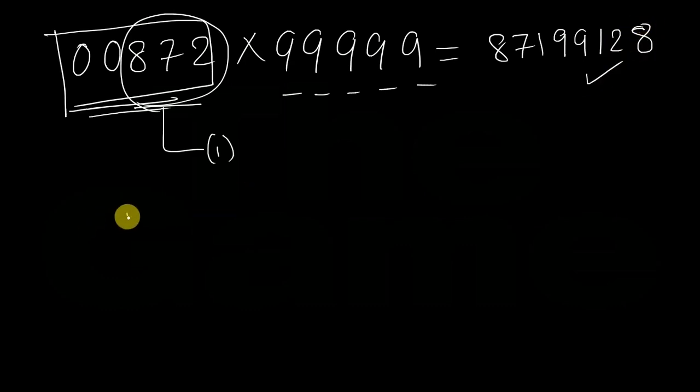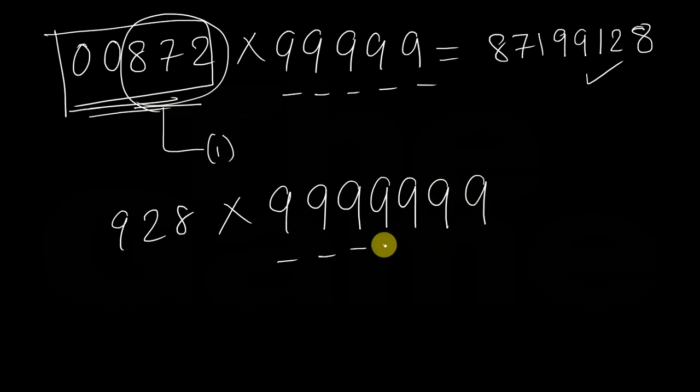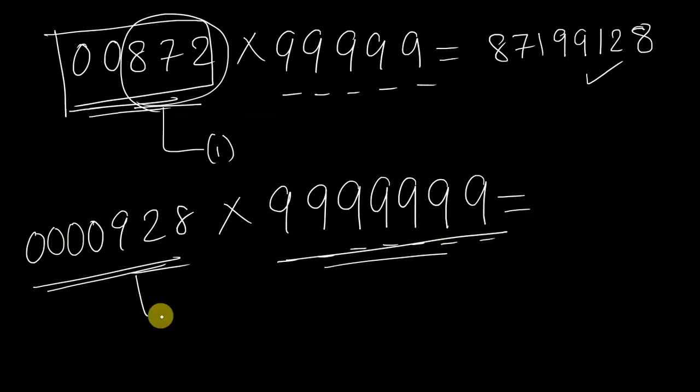If I ask you to multiply 928 into 9999999. How many 9's are there? 1, 2, 3, 4, 5, 6, 7 nines. And here we are having a 3 digit number. So, we will be placing 4 zeros before 928. And now, it is a 7 digit number. Here we are having 7 nines. So, we can apply our trick. And we will write this number after applying Eknunen Purven Sutra. That means we have to reduce 1 from this number. It will become 0000927.